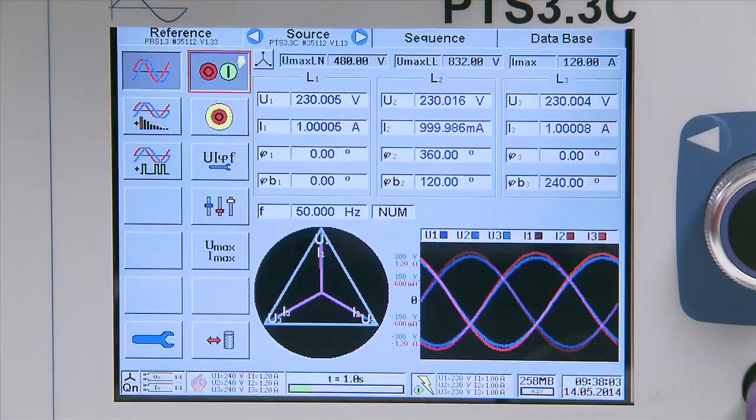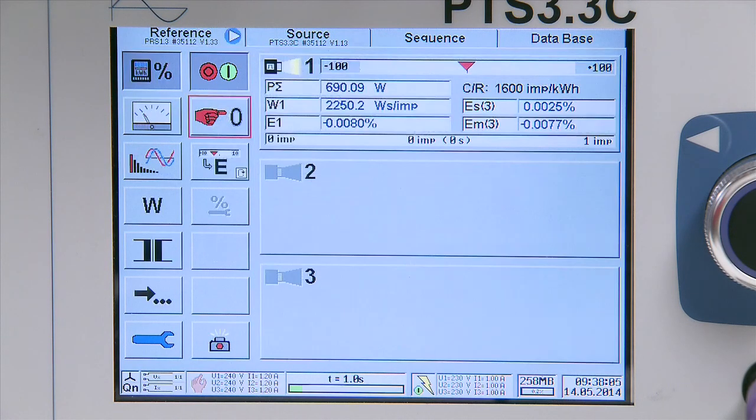The reference meter is set to measure total active power error. For this configuration, we get a percent error of 0.0020%.